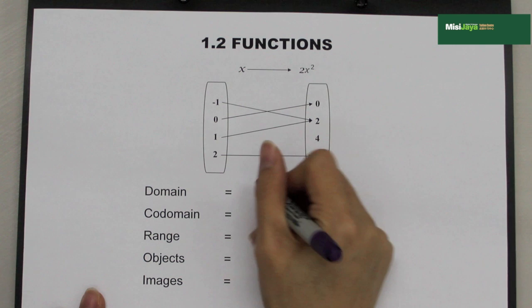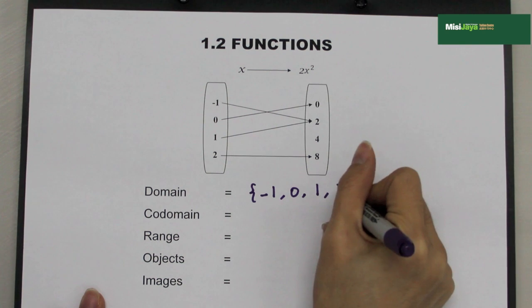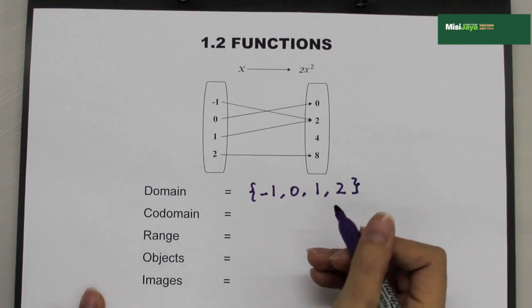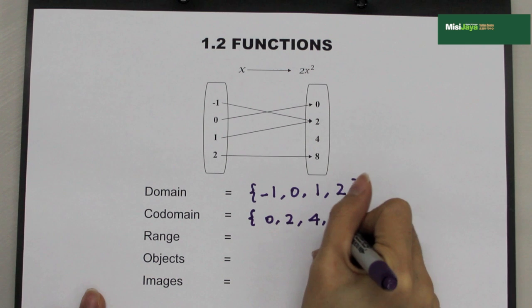The codomain will be on the right-hand side. So, the domain is {-1, 0, 1, 2}. For the codomain, it will be {0, 2, 4, 8}.